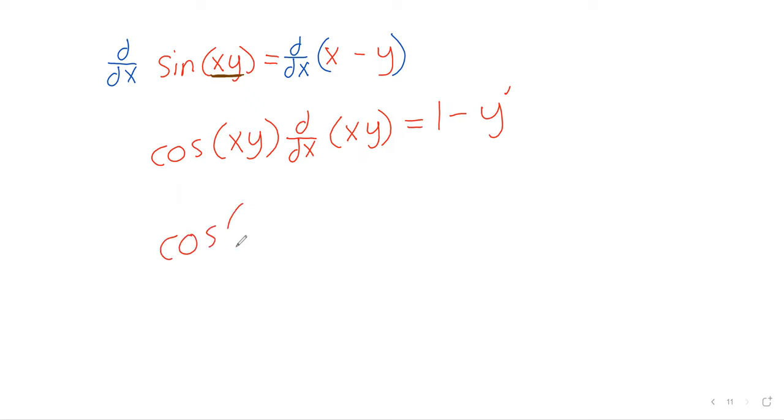So what the chain rule says is we should take the derivative of that outside thing. The derivative of the sine is the cosine. And then we should take the derivative of that inside function. On the right, the derivative of x is 1. What's the derivative of y? Well, the derivative of y is y prime. That's exactly what we're trying to find out. Now for the product rule. Inside this derivative, we have one expression being multiplied by a second expression. So we need the product rule here. The derivative of x is 1. That y gets left alone. Now this x gets left alone. And we don't know what the derivative of y is.